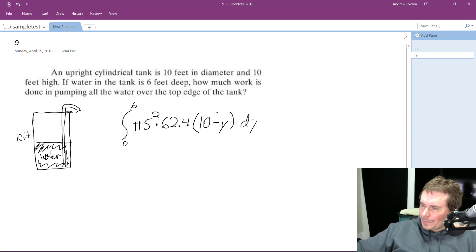So integrating this, all these are constants here, so I'm going to put those out in front. So π times that ends up being 1560, from 0 to 6...